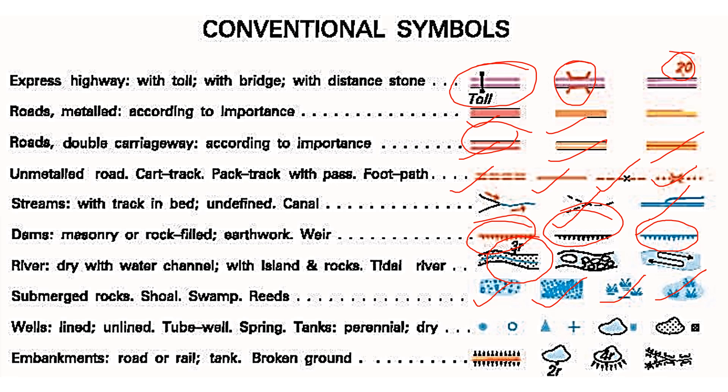Next, look at the well. If it is complete blue solid color, that is a perennial lined well. When it is only outlined, that is a perennial unlined well. This is a tubewell — a blue triangle. A blue plus is a spring, and this is a tank which is perennial if it is having blue color. If it is black, that means it is not perennial.